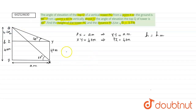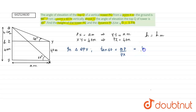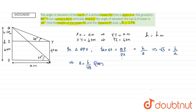In triangle QPX, we have tan 60. Tan 60 is the vertical distance QP divided by PX, which is the adjacent side. QP is h and the adjacent side is a. Tan 60 is root 3, so root 3 equals h divided by a. That implies a equals h divided by root 3, or h equals a root 3.